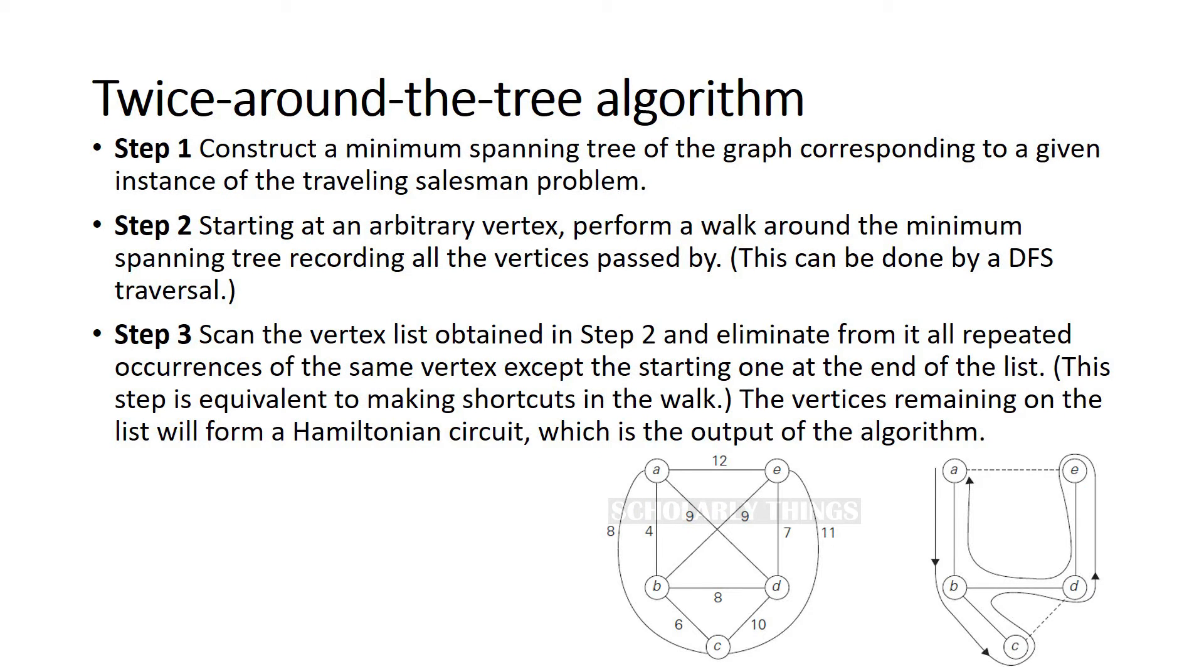Next one is twice around the tree algorithm. In this, step one is to construct a minimum spanning tree of the graph corresponding to a given instance of the TSP. Step two, starting at an arbitrary vertex, perform a walk around the minimum spanning tree, recording all the vertices passed by.